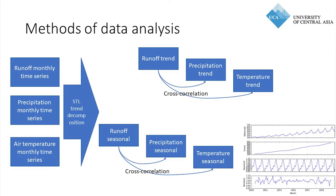For our method analysis, we took the time series of runoff, precipitation, and air temperature and performed STL trend decomposition. This procedure splits the initial data into a trend component, a seasonal component, and a remainder error component — summing all three together returns the initial data. We then obtained trend and seasonal components of runoff, precipitation, and temperature.